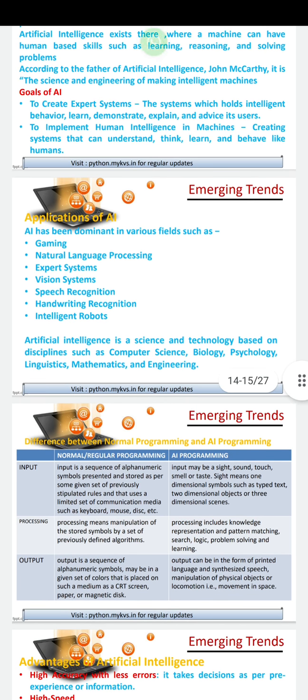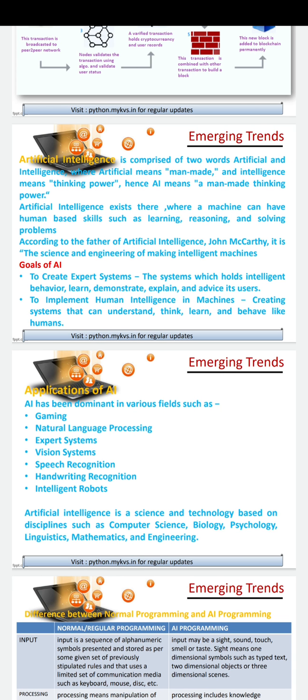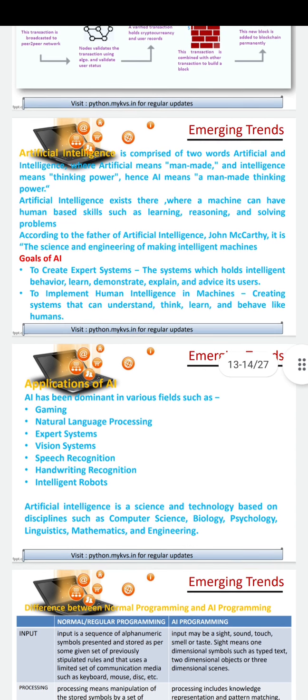So artificial intelligence is any manmade thing which has some thinking power. We humans make artificial intelligence for our convenience, to get our work done, and to make our daily life easy. Artificial intelligence exists where a machine can have human-based skills such as learning, reasoning, and solving problems.